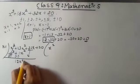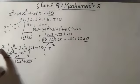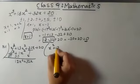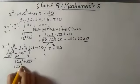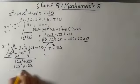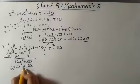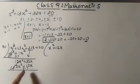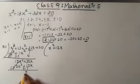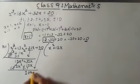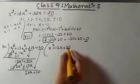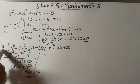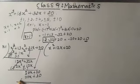Bringing down 32x, I divide 12x squared by x to get 12x. Multiplying x plus 1 by 12x gives 12x squared plus 12x. Subtracting, 12x squared cancels and 32 minus 12 gives 20x. Bringing down 20, I divide 20x by x to get 20. Multiplying x plus 1 by 20 gives 20x plus 20. Subtracting, both cancel and the remainder is 0.